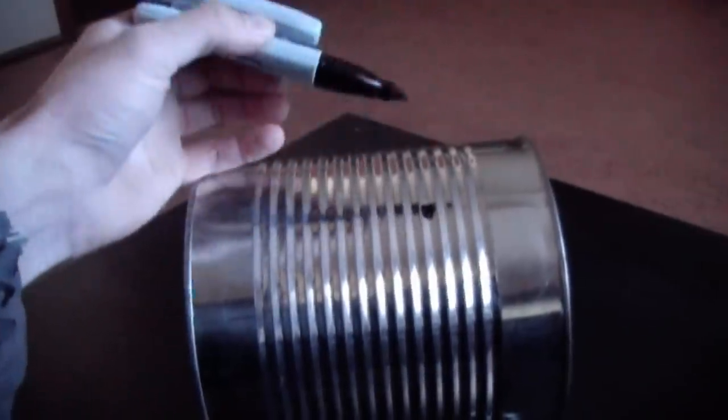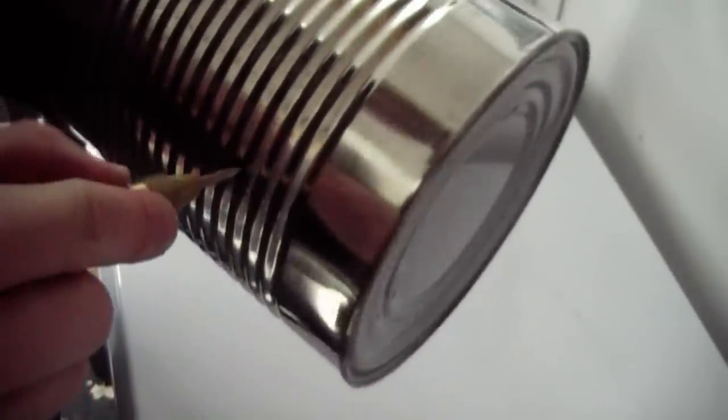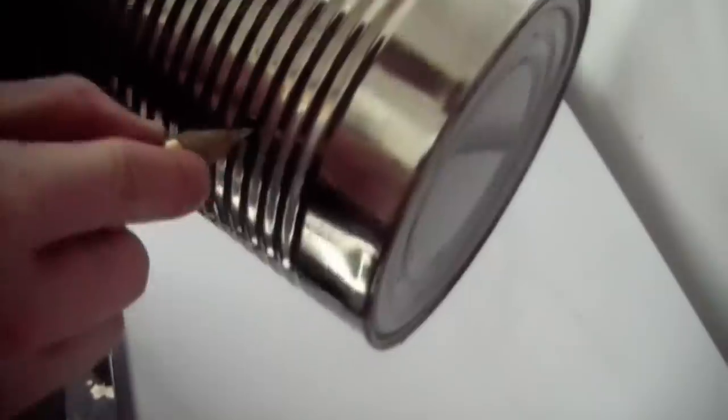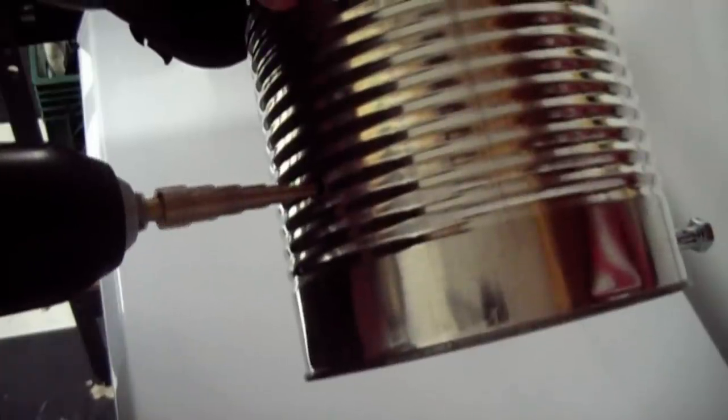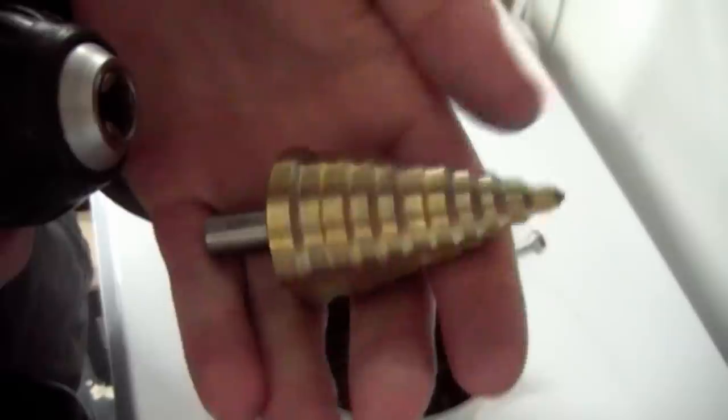I plot a mark where the burner will enter the casing. I center punch the mark and then drill. A larger step bit is used to finalize the diameter.